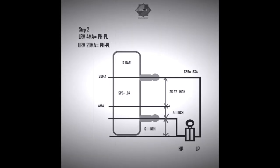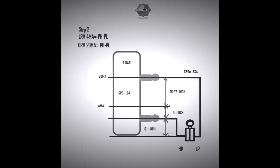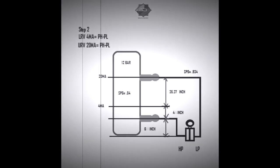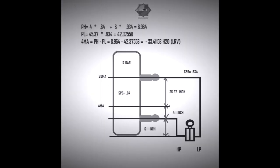For LRV, the formula is PH minus PL. PH is calculated as: the 4-inch zero percentage level above HP tapping, that is 4 inches multiplied by process gas specific gravity 0.84, plus the 6 inches below the HP side tapping point where the transmitter is mounted, multiplied by the capillary specific gravity 0.934. We get PH = 8.964.